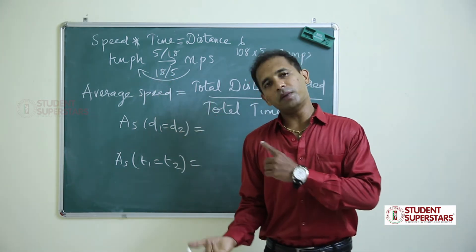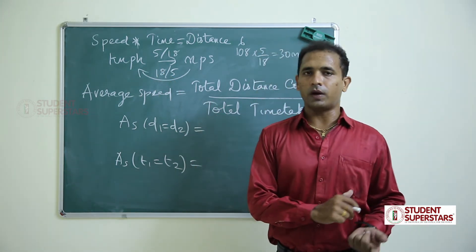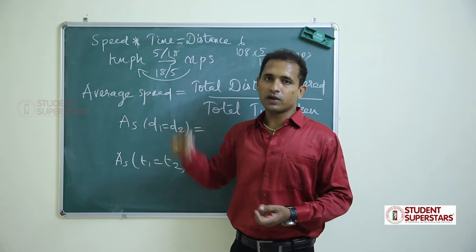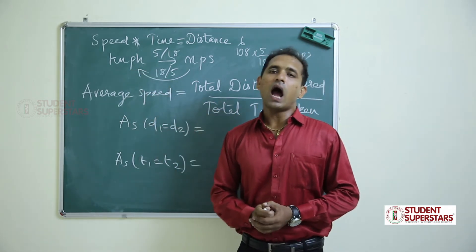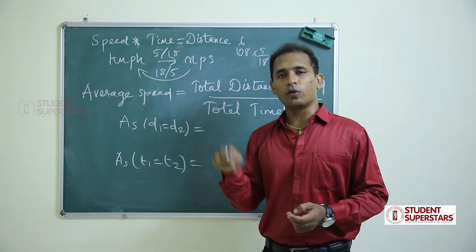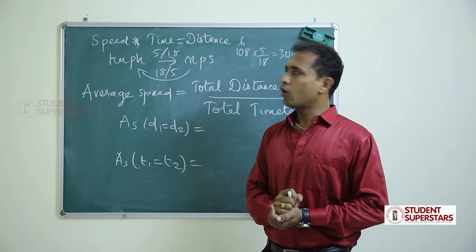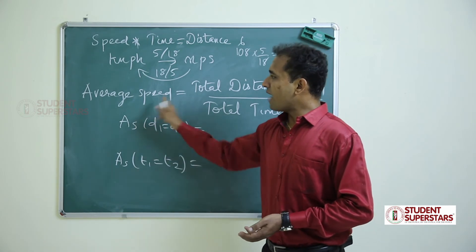To summarize the conversions: kilometer per hour to meter per second — multiply by 5/18. Meter per second to kilometer per hour — multiply by 18/5.